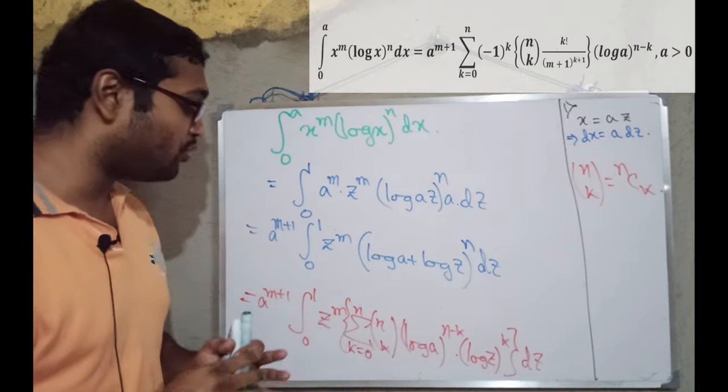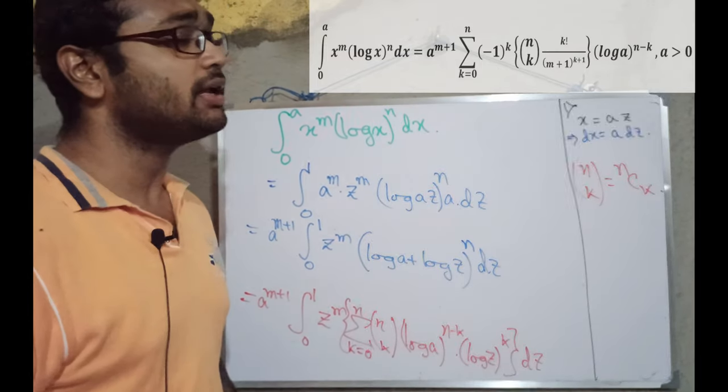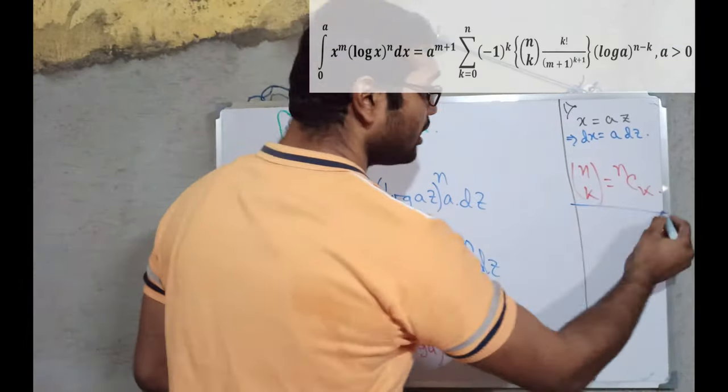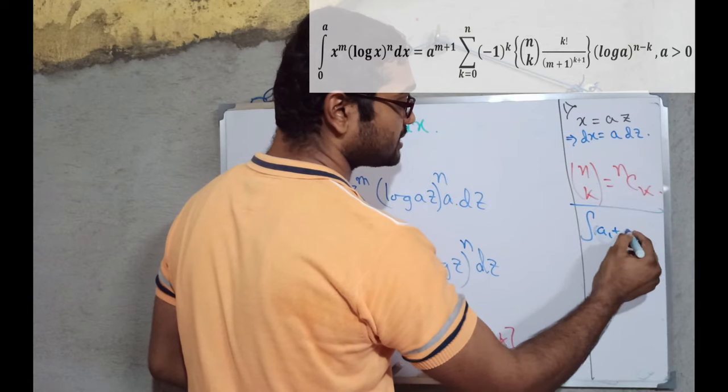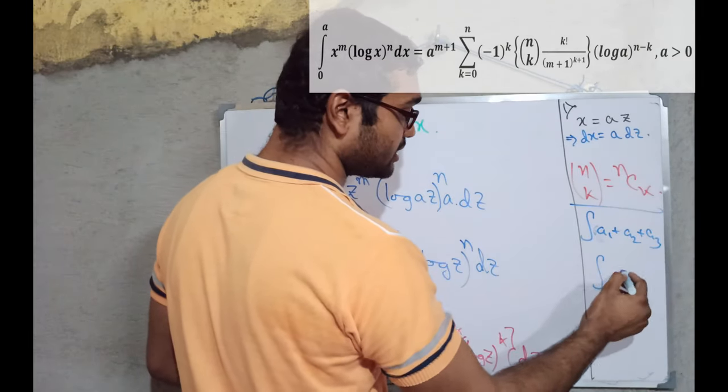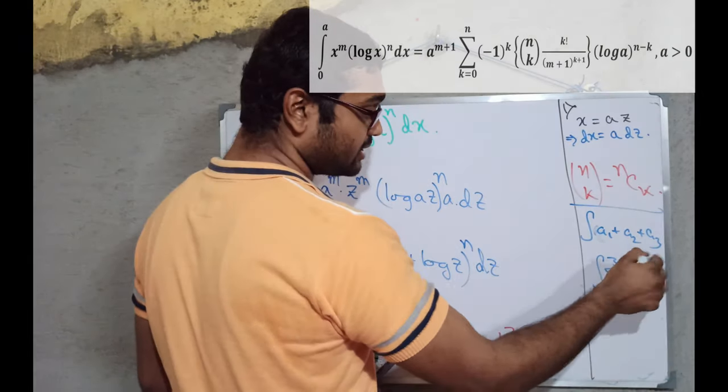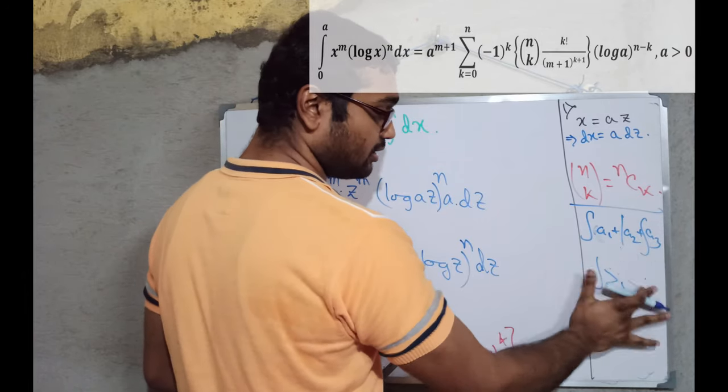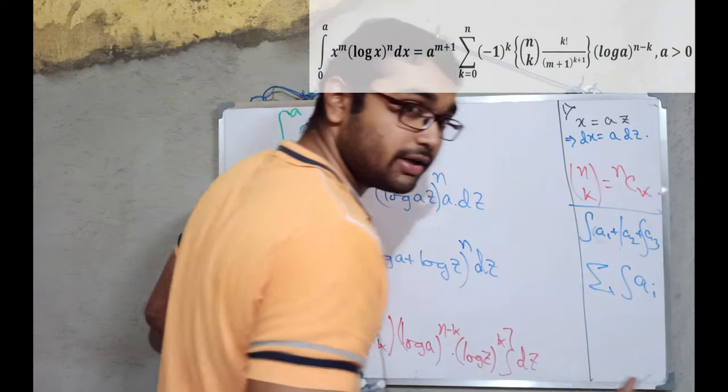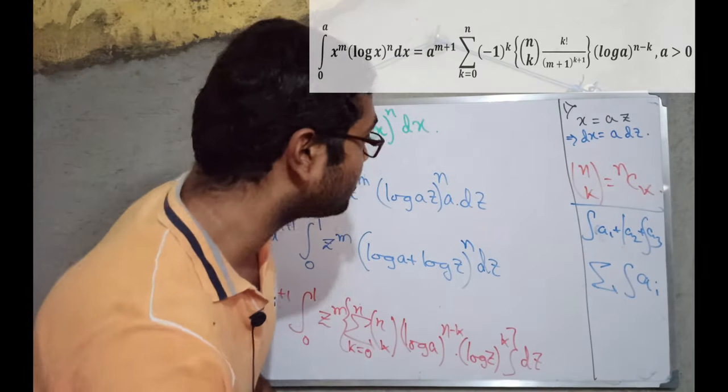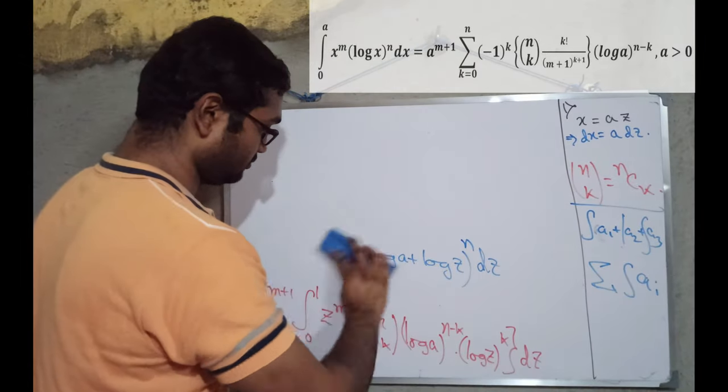And as we all know, we can interchange this integral and this summation. Why is it so? It is a very simple thing. Why we can interchange the integral and summation, just see here. It is integration of, let it be a1 plus a2 plus a3. Or we can say, integration of summation a_i, i equal to 1 to 3. And then, we can write it as integration to each of them. And then, we can write summation of integration a_i. Similarly, we are going to interchange integration and summation.